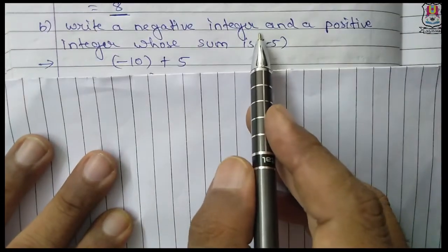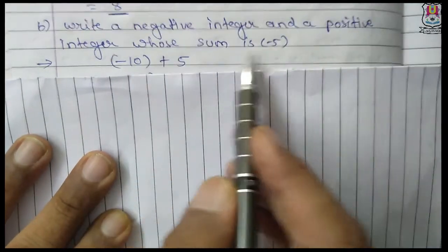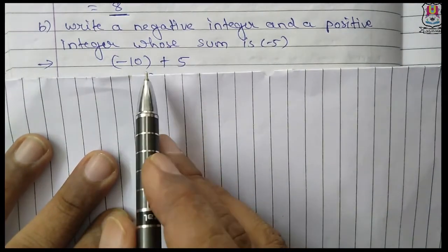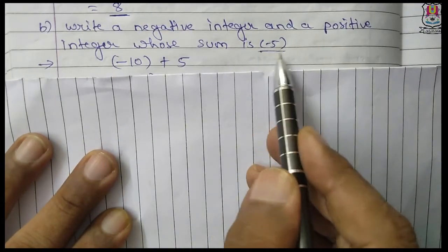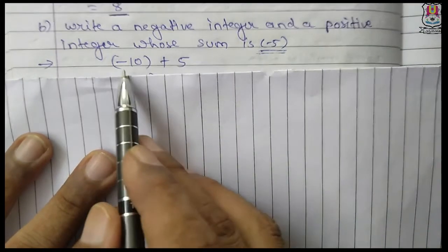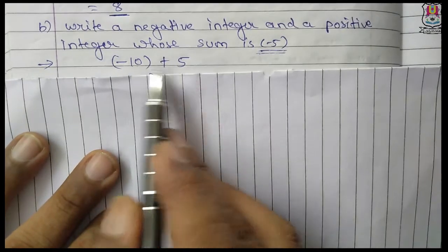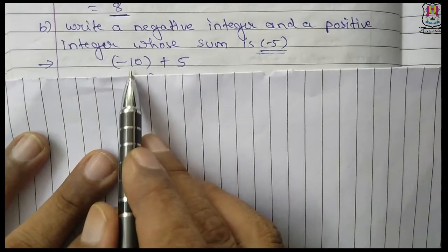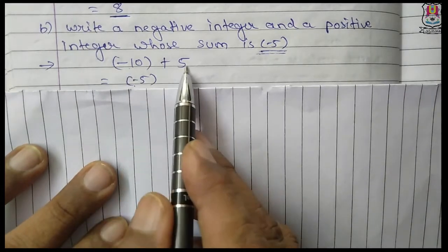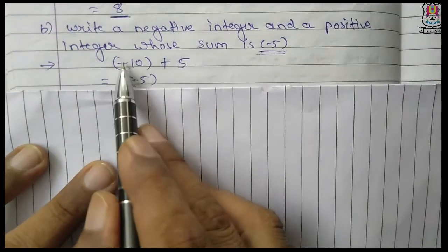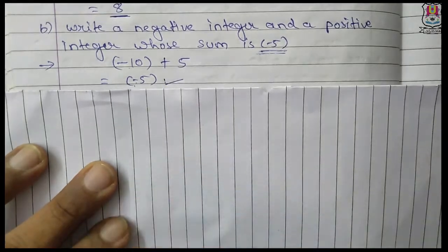Question B: write a negative integer and a positive integer whose sum is minus 5. We need one negative and one positive integer giving minus 5. The solution is minus 10 plus 5. Plus minus is minus, and minus is the bigger sign, so 10 minus 5 is 5 and the sign of the bigger number is applied — the answer is minus 5.